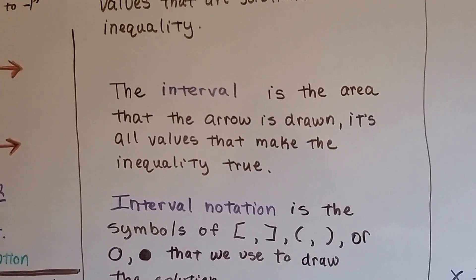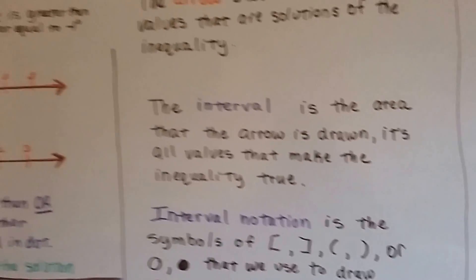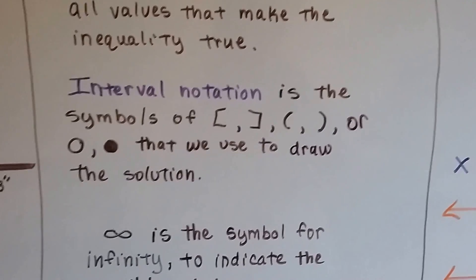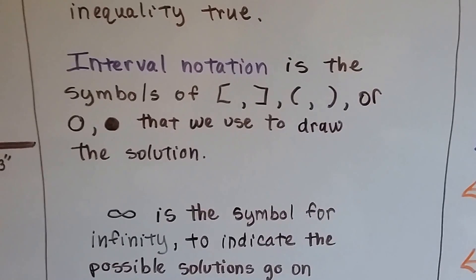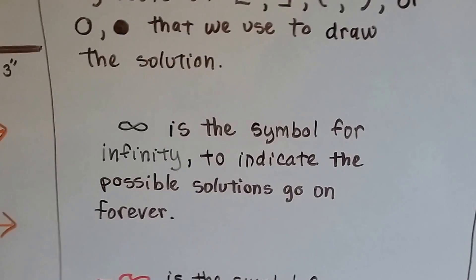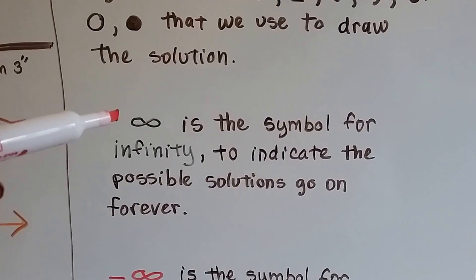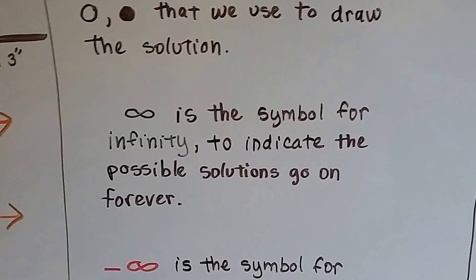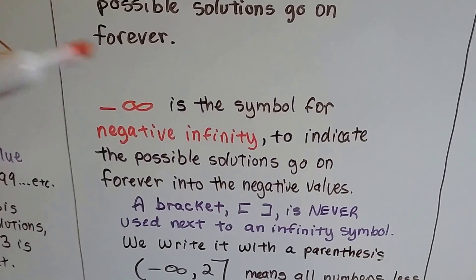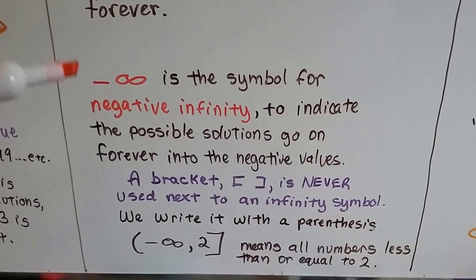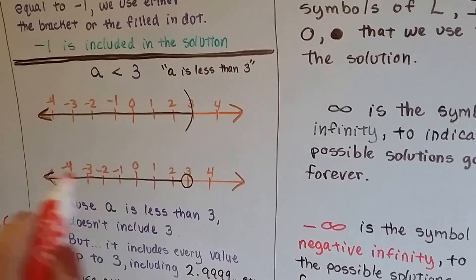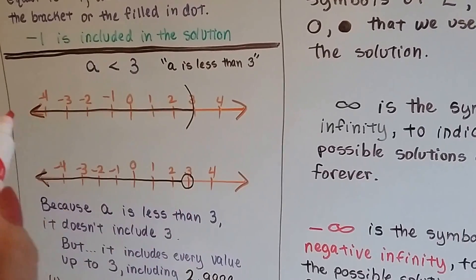The interval is the area drawn and it's the values that make the inequality true. So 5 would make this true even though it's not drawn on there — that would still be part of the interval. Interval notation is the symbols — the brackets, the parentheses, or the open or closed dot that we use to draw the solution. That's called interval notation. And this is the infinity symbol — the sideways 8 — and we use it to indicate that the possible solutions go on forever, to infinity and beyond. This is the symbol for negative infinity, and we use it to indicate the possible solutions that go on forever into the negative values. So this goes on forever into the negative values — that's the way the arrow's pointing — so this would be negative infinity.